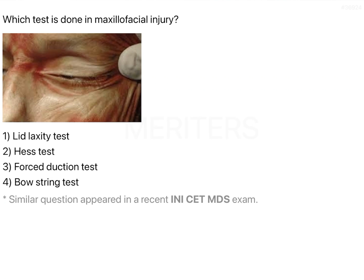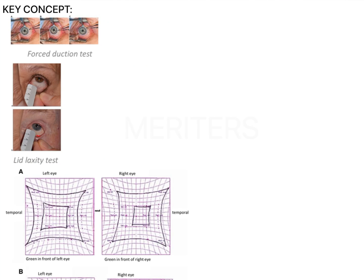Force duction is done — now what is the lid laxity test? The lid laxity test is performed by pulling your lower eyelid away from your eye and assessing how quickly and easily the eyelid returns back to its normal position. During this test, if the patient needs to blink for the eyelid to return to its original position, then laxity of the lower eyelid or the canthal tendon is present.